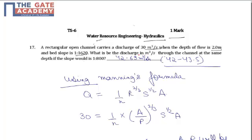It is asked what will be the discharge in m³/s through the same channel at the same depth if the slope is changed to 1:800. That is, the slope is made steeper, so one thing is for sure: the discharge of case 2 has to be greater than the original discharge.